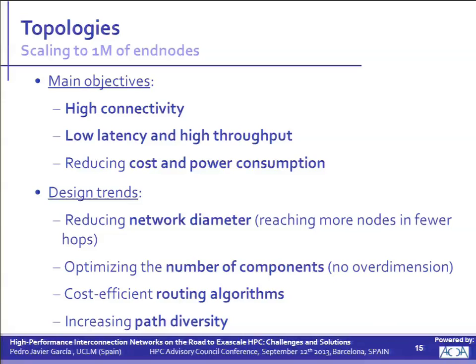Another interesting trend is to propose and implement cost-efficient routing algorithms in order to achieve great performance without requiring extra resources. The simpler the algorithm, the lower the cost and the power consumption. It is also interesting to increase path diversity in order to ease fault tolerance in such huge systems. Considering these design trends, which are the topologies likely to be suitable for Exascale systems?